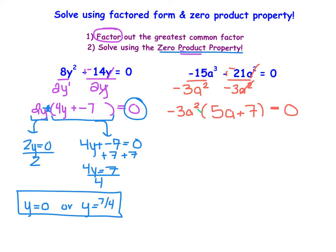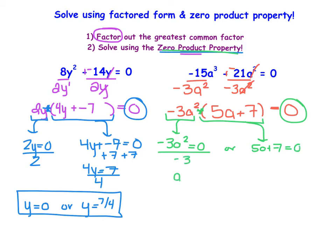I have a multiplication of two items equaling 0, so I have the zero product property. I can set each part equal to 0: negative 3a² = 0, or 5a + 7 = 0. Dividing by negative 3 gives a² = 0 — the only thing squared that equals 0 is 0 itself, so a = 0. Or subtracting 7 and dividing by 5 gives a = -7/5.